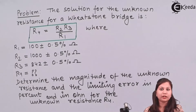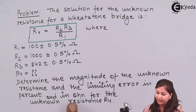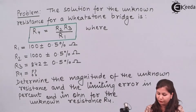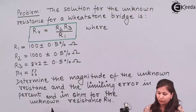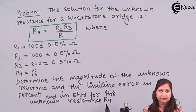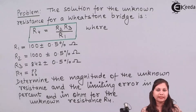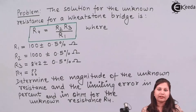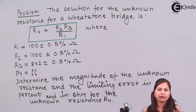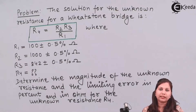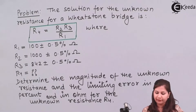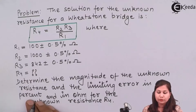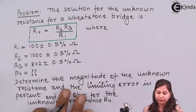That is, we have to find out the percentage limiting error and also the limiting error in ohms for the unknown resistance R4.